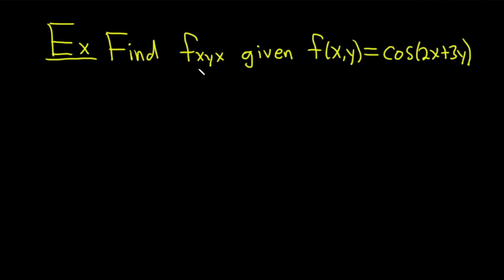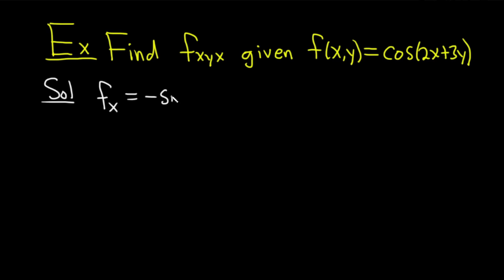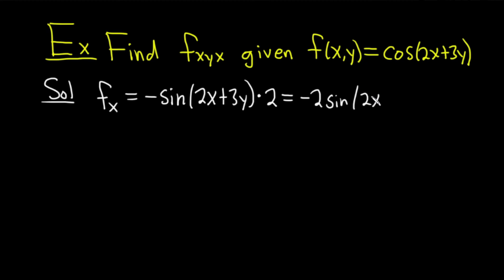In this example, we have to find f sub xyx given f(x,y) = cos(2x + 3y). Note that this is actually a third-order partial derivative, so we differentiate three times. Starting with fₓ, we use the chain rule on cos(2x + 3y): the derivative of cosine is negative sine, we leave the inside untouched at 2x + 3y, then multiply by the derivative of the inside with respect to x. The derivative of 2x is 2, and the derivative of 3y is 0 since it's a constant. So fₓ = −2·sin(2x + 3y).